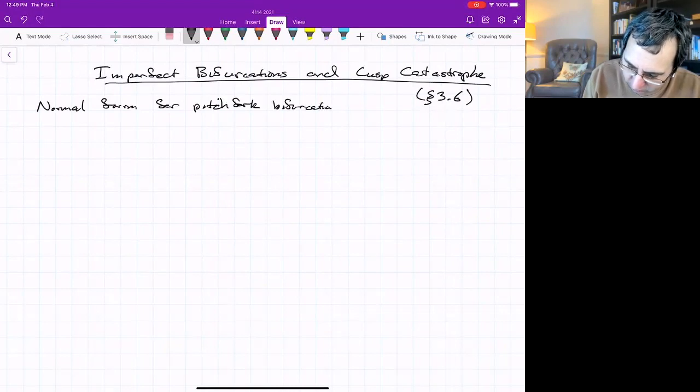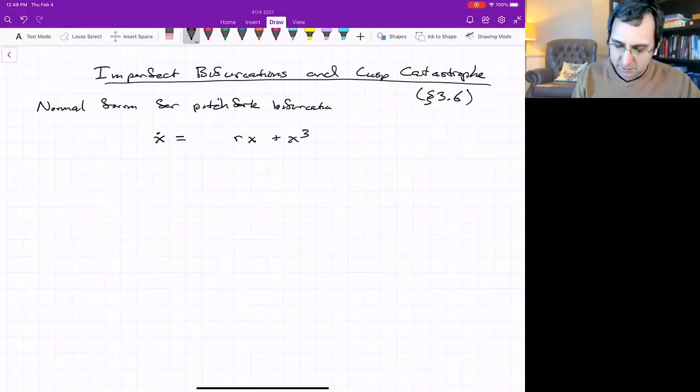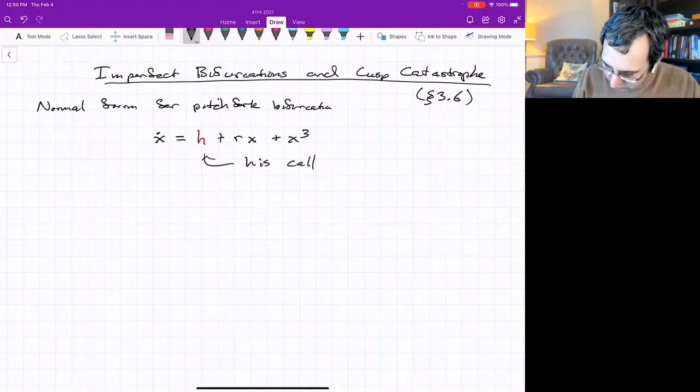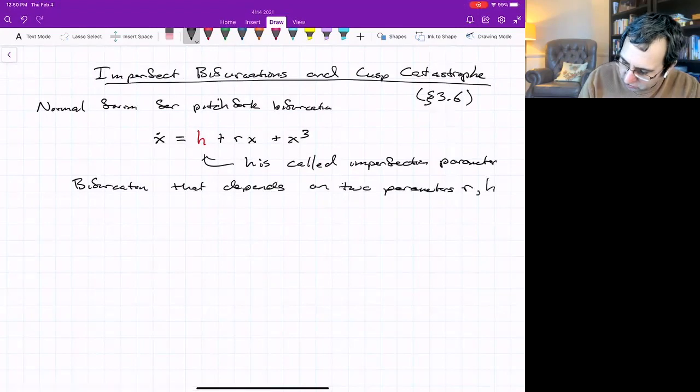So the normal form for the pitchfork bifurcation was that thing with a cubic: x dot equals rx minus x cubed. But now we will add on, instead of epsilon, I'm going to call it h, following what the book does, because this breaks the symmetry. h is called an imperfection parameter. Nothing's perfect.